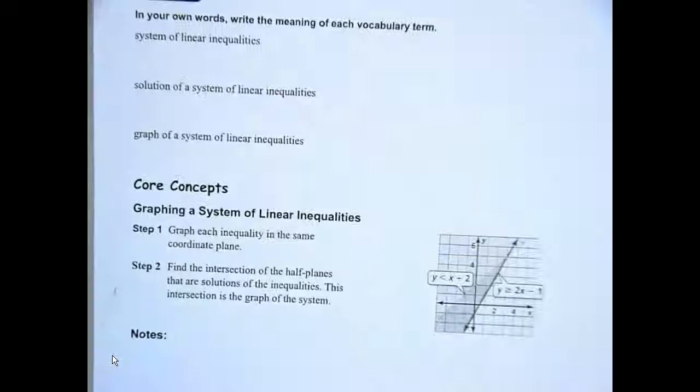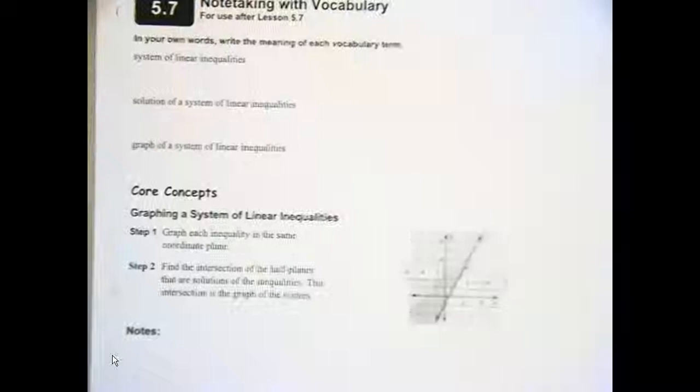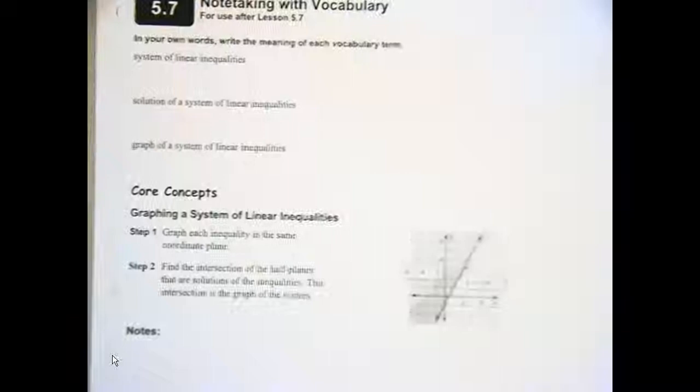Page 164 of your student journal kind of summarizes what we just talked about. It gives you opportunity, if you want, you can do some definitions there. It might be a good way to review for your test later on. Your assignment today is going to be page 165 and 166 in your student journal. Off you go.